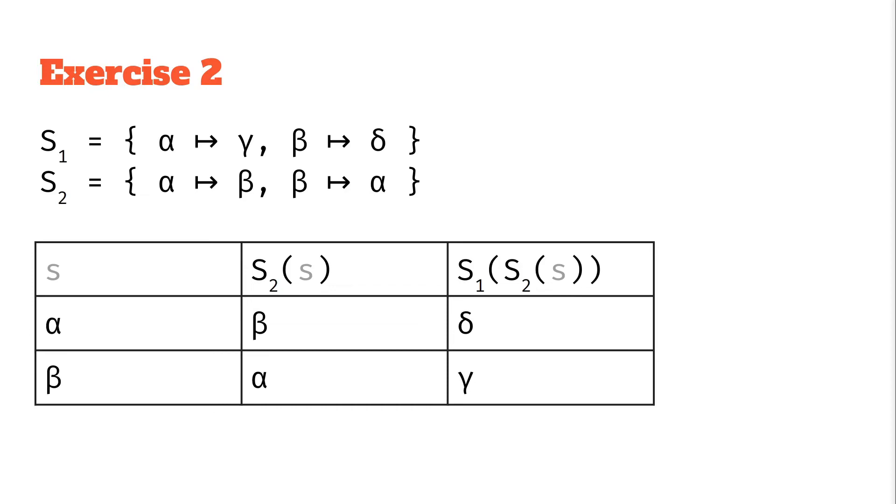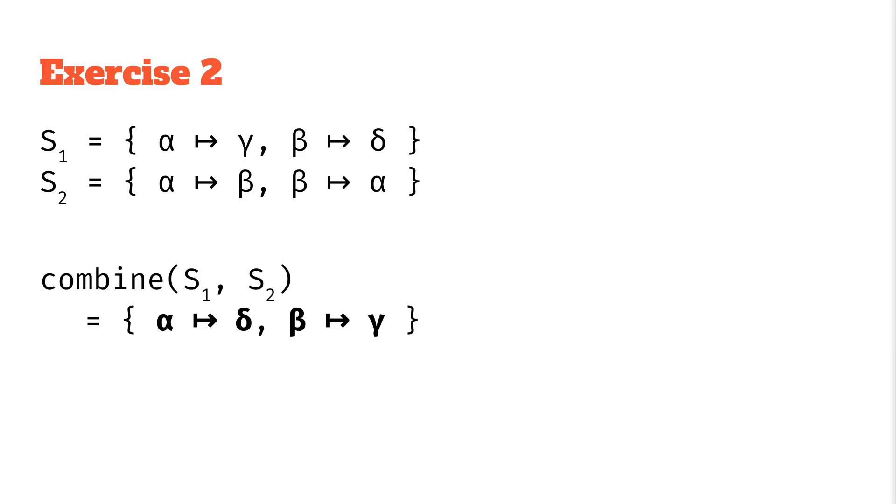As before, we can look at what does applying s2 and then s1 do overall to all these things on the left hand side of our mappings. What takes alpha and turns it into a delta and beta and turns it into a gamma. And so those are our results. That is our combined substitution. Again, test this out and see if it works.